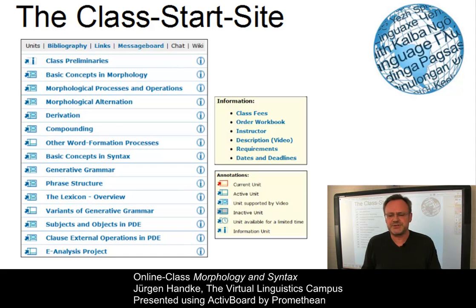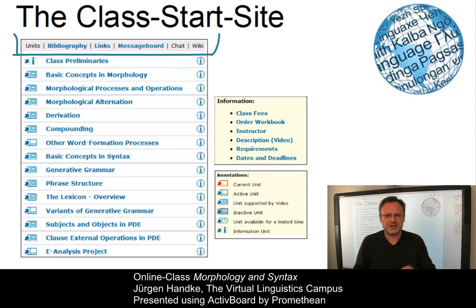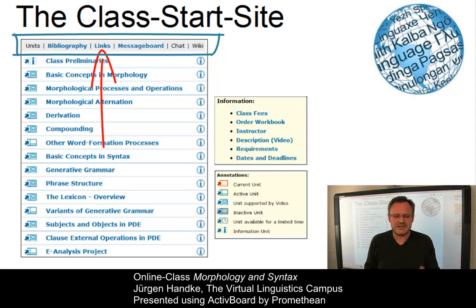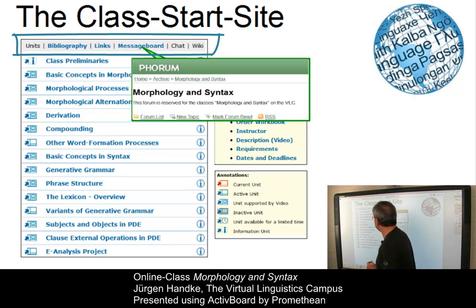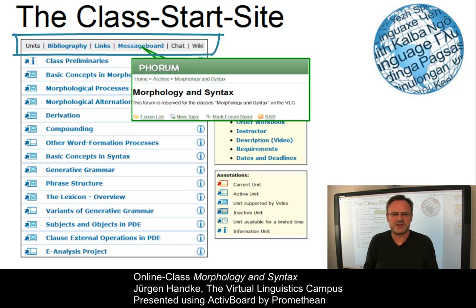On the class start site, you have access to various additional options such as information about your class instructor or the class requirements, to name just two of them. The links in the class header provide you with a complete list of references, the link bibliography, some class-related links, and a hyperlink to the class-related forum, which is accessible to all registered users of this class.